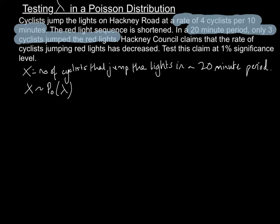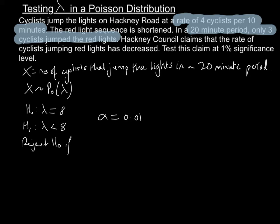Now we need to write our hypotheses. The null hypothesis is what normally happens. We're told the rate is 4 cyclists per 10 minutes, but because we're testing in a 20-minute period, lambda is equal to 8. The alternative hypothesis is that the rate has decreased, so H1: lambda is less than 8. We're testing at the 1% significance level, so alpha is 0.01. We will reject H0 if the probability of X less than or equal to the observed value is less than or equal to 0.01.